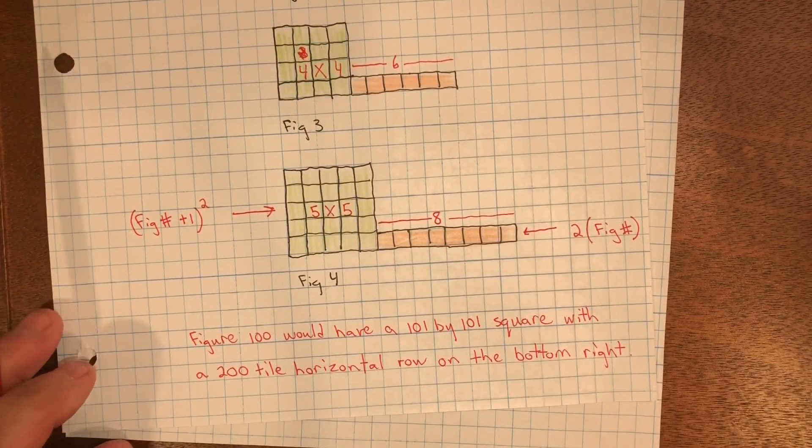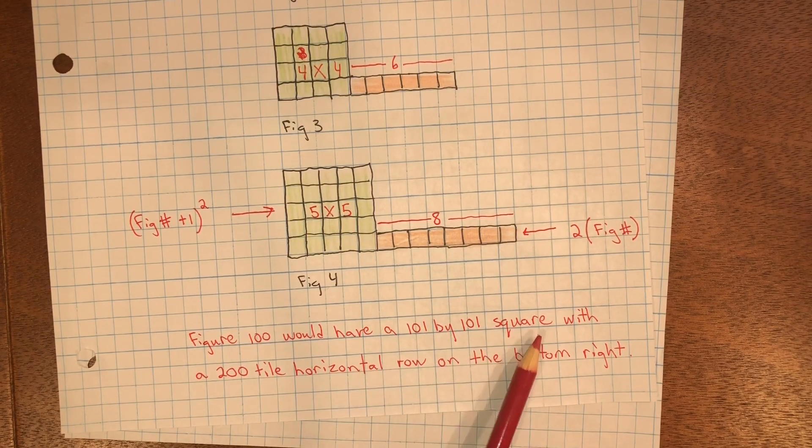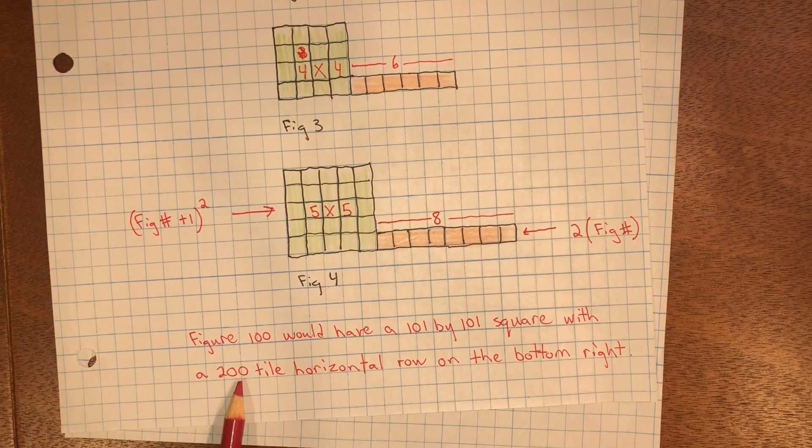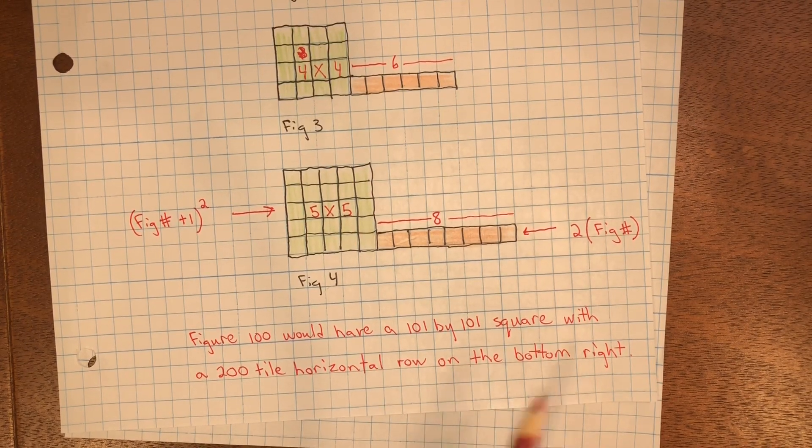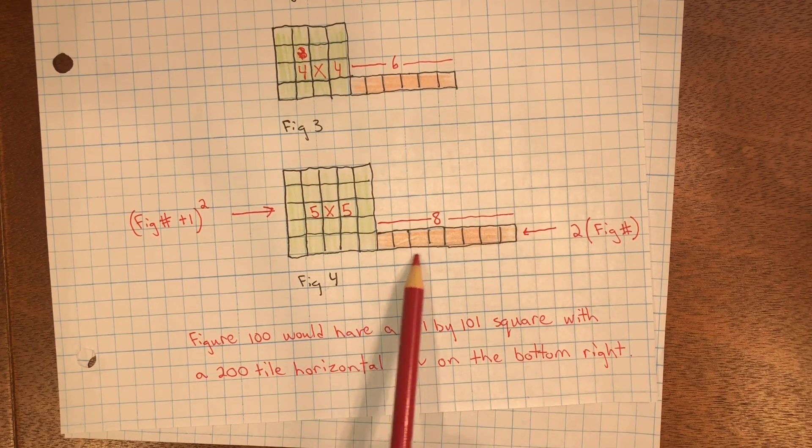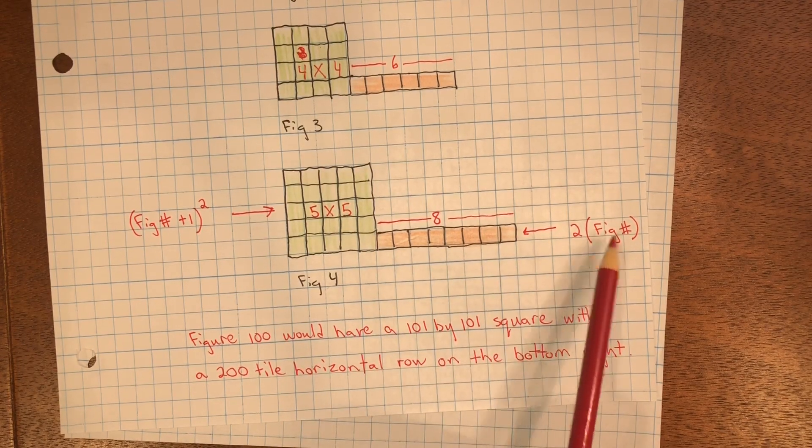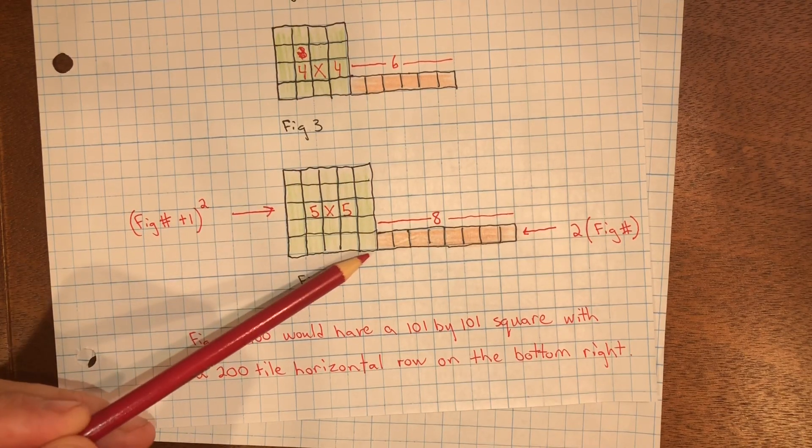Figure 100 would have a 100 by 100 square with a 200 tile horizontal row on the bottom right. So figure 100 would have 200 tiles here, and it would be a 100 by 100 square.